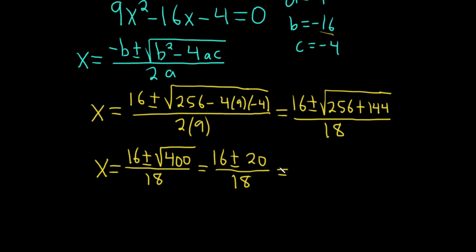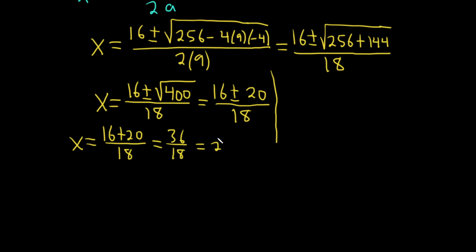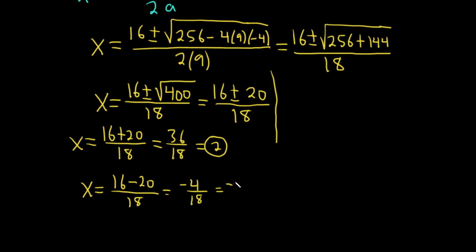Now we have two answers. For the plus: x equals 16 plus 20 over 18. 16 plus 20 is 36, so we get 36 over 18, which equals 2. For the minus: x equals 16 minus 20 over 18, which is negative 4 over 18, giving us negative 2 over 9.